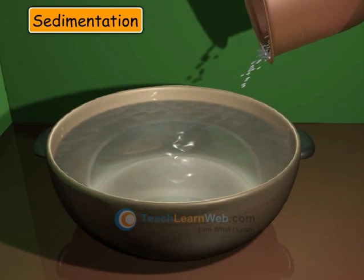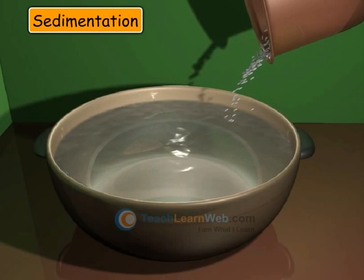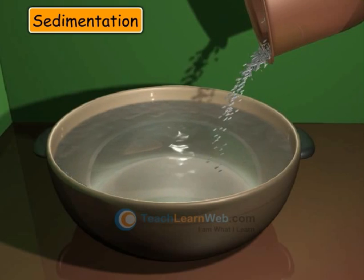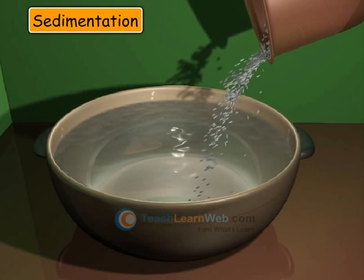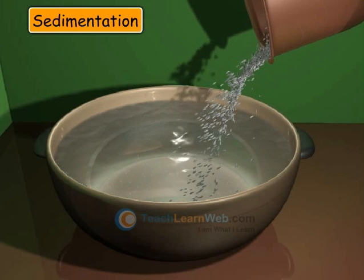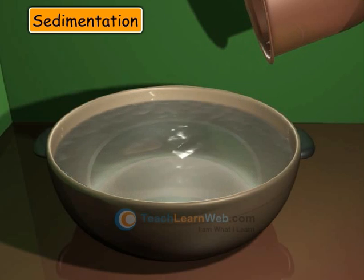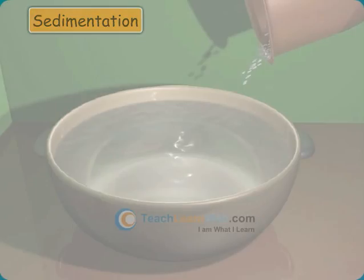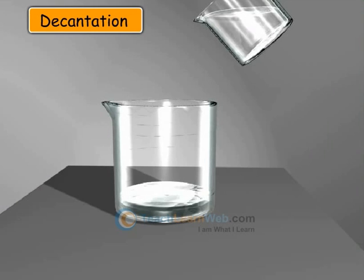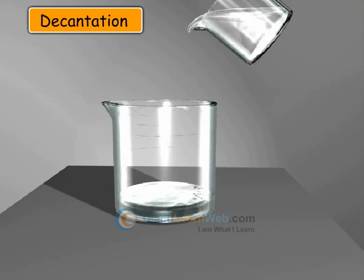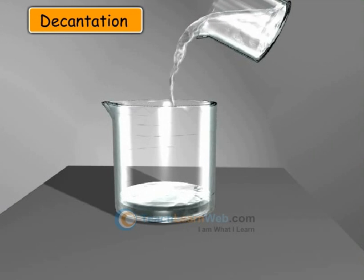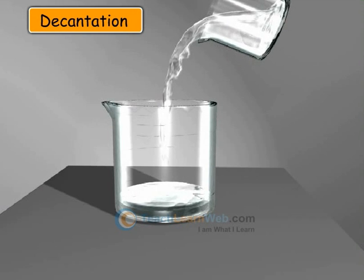Sedimentation is the method by which water is added to a mixture and heavier components are made to settle down. Decantation is the process of removal of the topmost water after sedimentation.